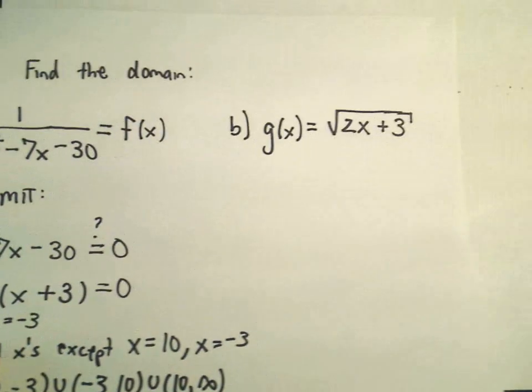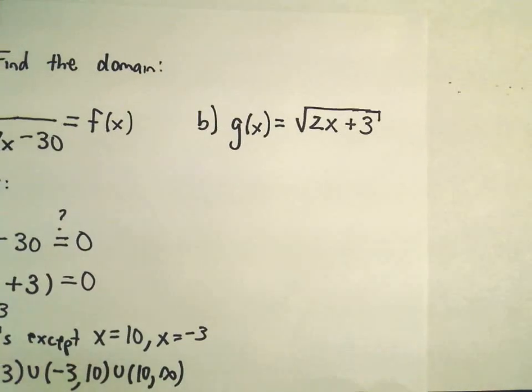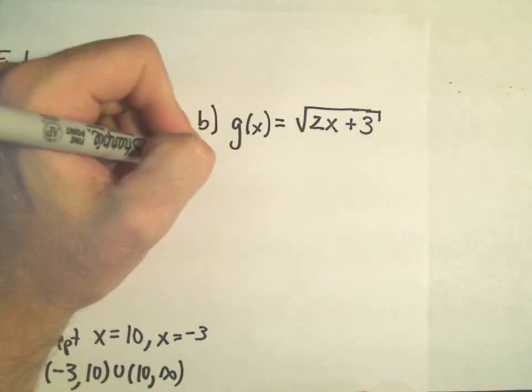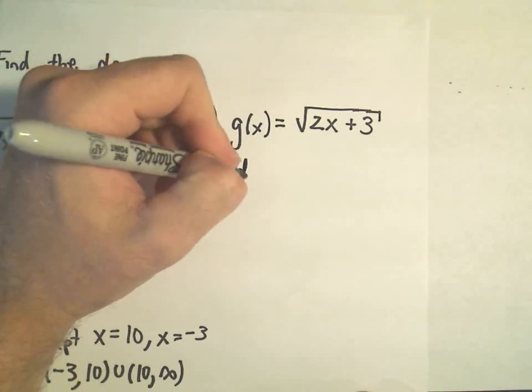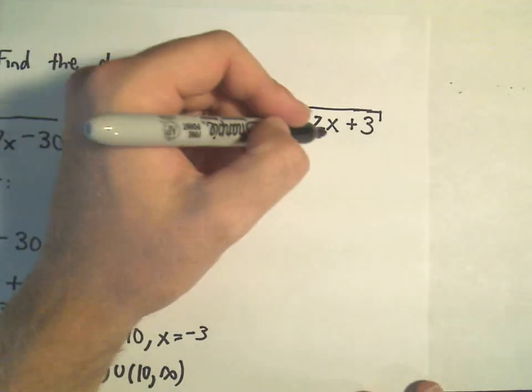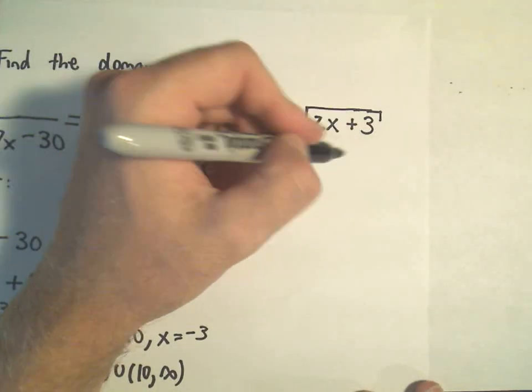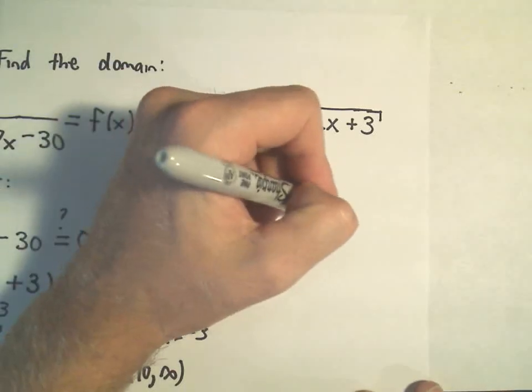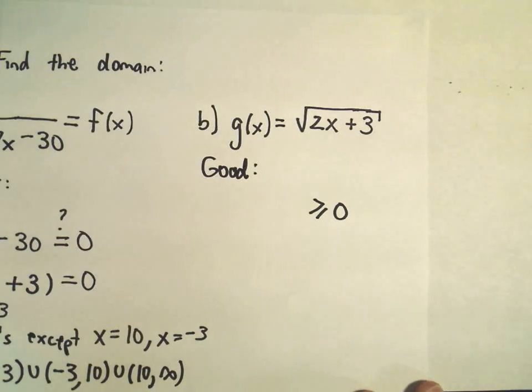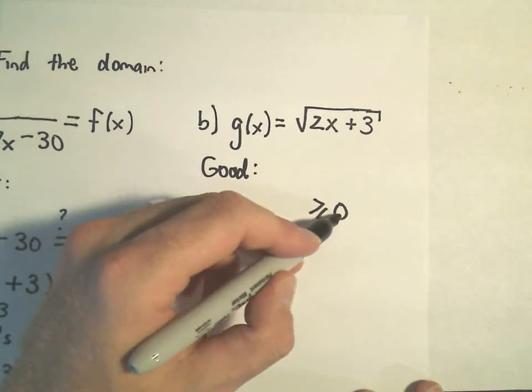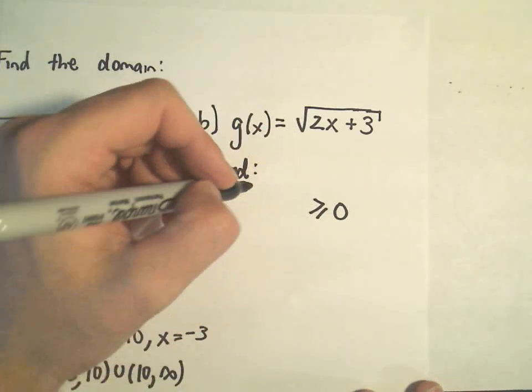The other one here, we have the square root of 2x plus 3. So again, to me, the values that are good in this case is the way I think about it. It's good if whatever's underneath the square root is greater than or equal to 0. That's what we need to happen. We only want numbers that are greater than or equal to 0 under the square root.